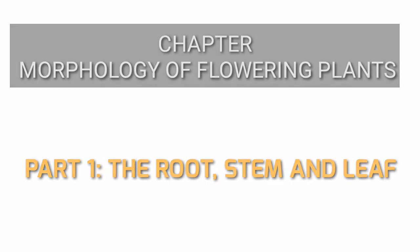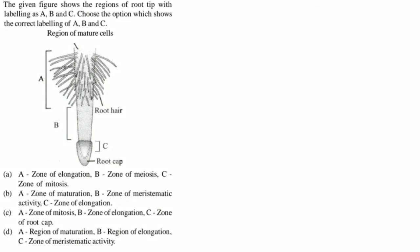Let us see the first concept: the root. The first question is a diagrammatic question taken from your NCERT textbook. There is a high possibility of getting this question for your NEET or CET examination. The question is: the given figure shows the regions of root tip with labeling as A, B, and C. Choose the option which shows the correct labeling of A, B, and C.